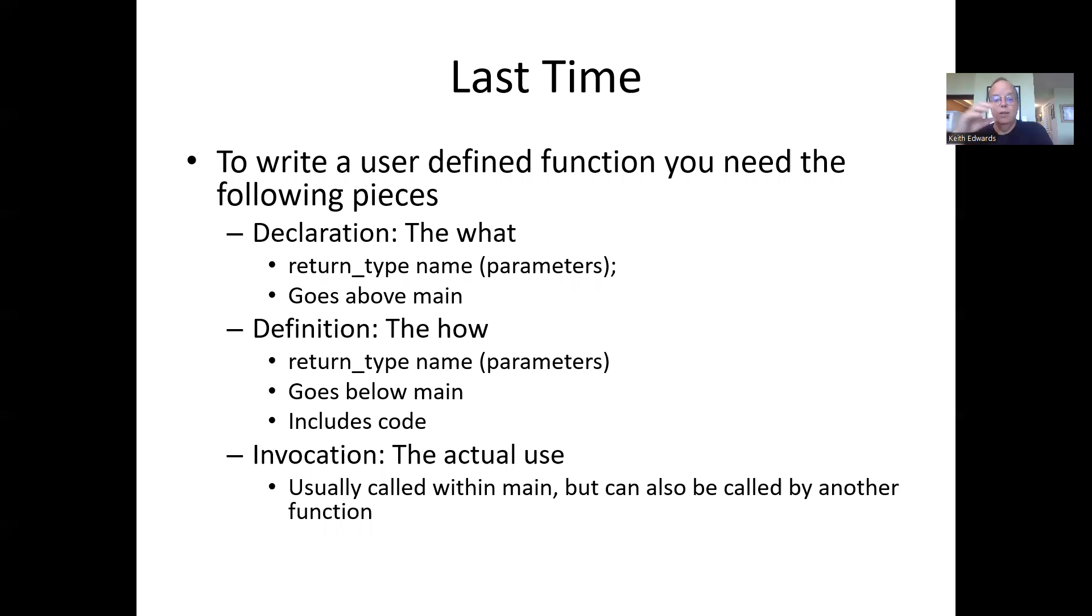The definition has the return type, the name, and the parameters with no semicolon after it. This goes below main and includes the code for how you will actually accomplish the task. Last but not least is the invocation, which is the actual use—when you call the function inside main. Typically you'll call it inside main, though one function can call another function.